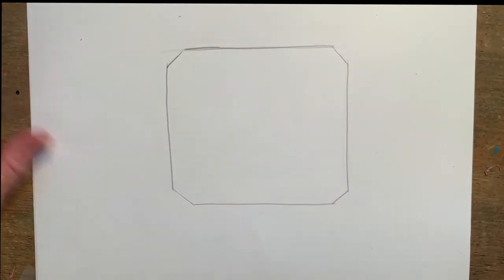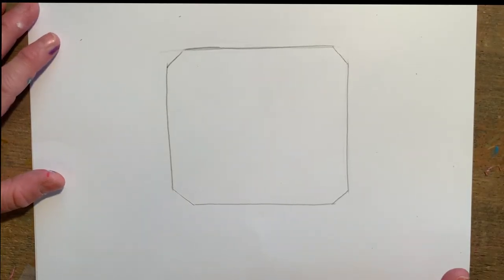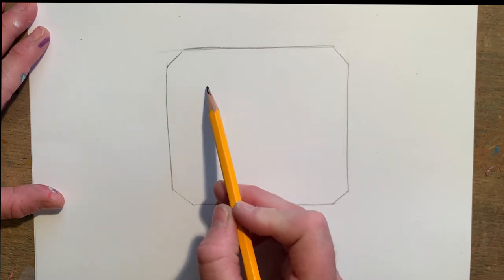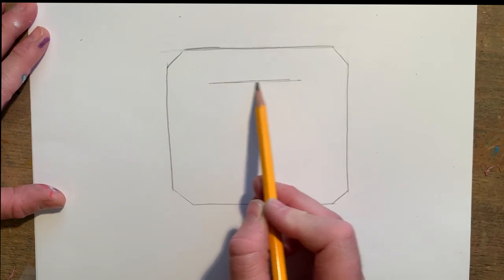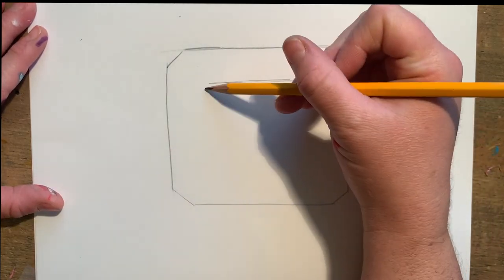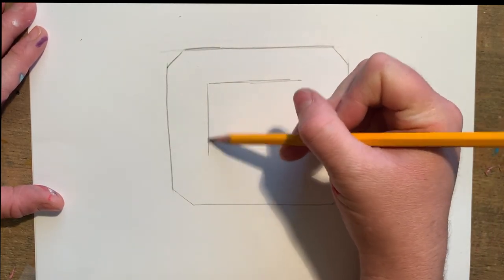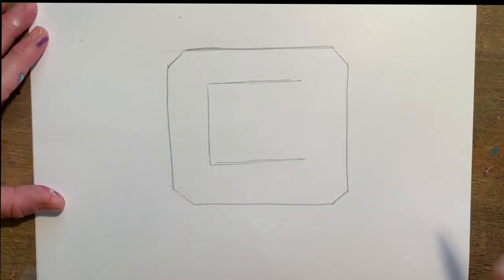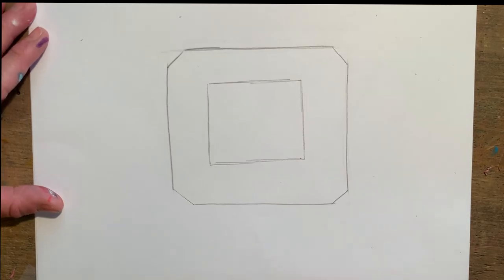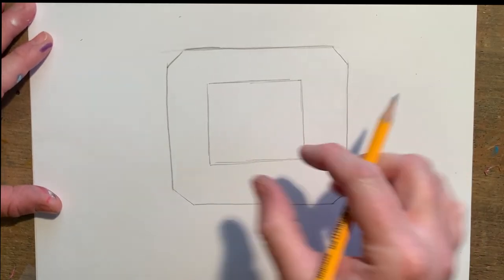Inside of this shape, I'm going to be drawing another smaller square. Making sure to leave some room and keeping it even, I'll sketch a smaller square. Notice I've kept about the same width on each of the edges.